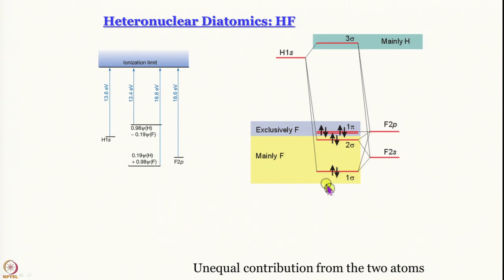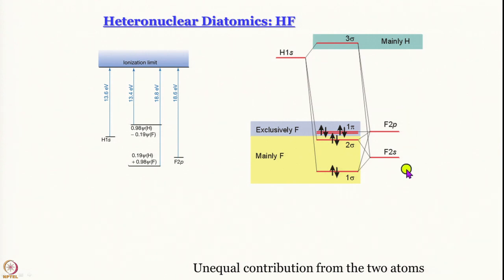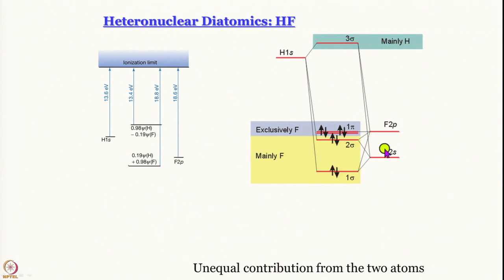The lowest energy orbital is mainly fluorine. What we see is that we have sigma orbitals made up of a linear combination of the hydrogen 1s orbital, the fluorine 2pz orbital, and the fluorine 2s orbital. The 2pz has the right symmetry to show overlap. The contribution — from the square of coefficients — of the fluorine 2s and 2p orbitals for the two sigma bonding orbitals is much greater than the contribution of the hydrogen 1s orbital. Similarly, for the 3-sigma orbital, the contribution of F 2p and F 2s is really small compared to H 1s, so it is a mainly hydrogen atom orbital.